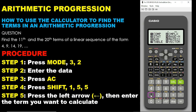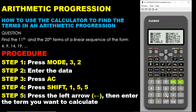Our presentation today is on arithmetic progression. How do you use the calculator to find the nth term in an AP? To do that, we are going to follow this simple instruction. The first step is that you press Mode, followed by the number 3, and then the number 2. Option 2 — because A plus B — this function on the calculator simply means arithmetic progression. Because this question is an AP, we pick the function for AP, which is number 2.